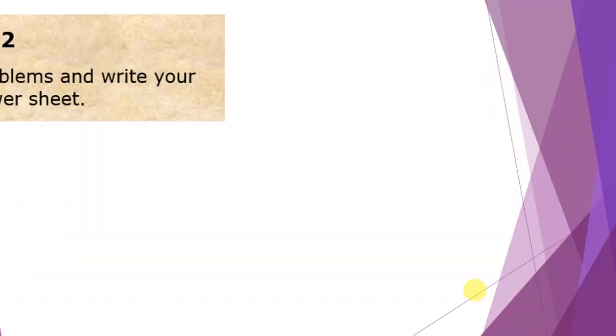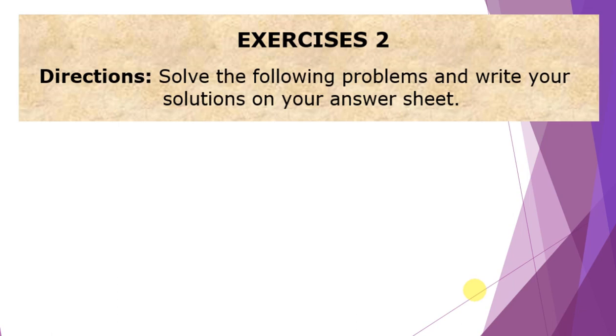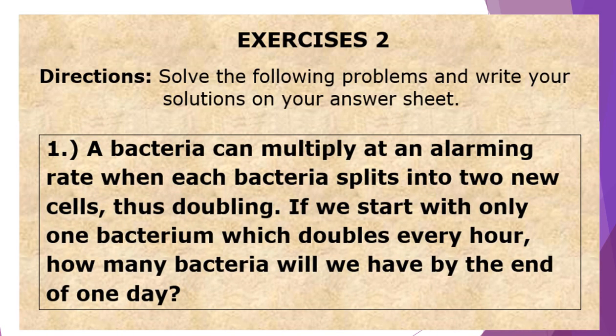Moving on to exercises number two. Solve the following problems and write your solutions on your answer sheet. For number one: A bacteria can multiply at an alarming rate. When each bacteria splits into two new cells, thus doubling, if we start with only one bacterium, which doubles every hour, how many bacteria will we have by the end of one day?